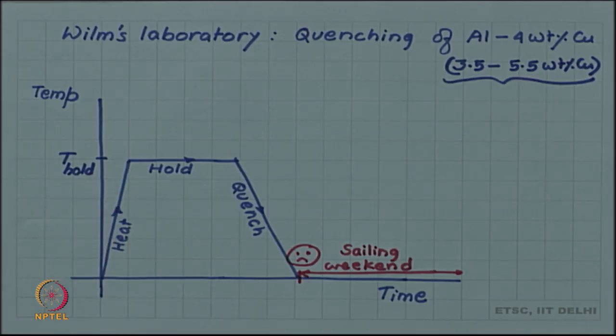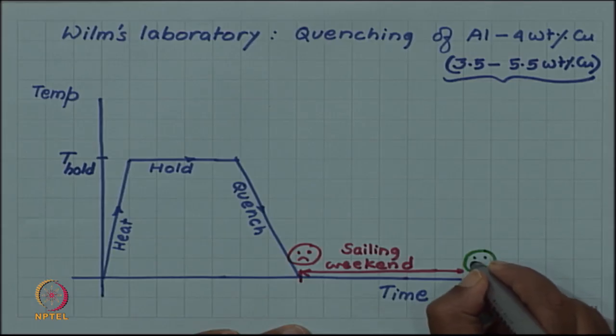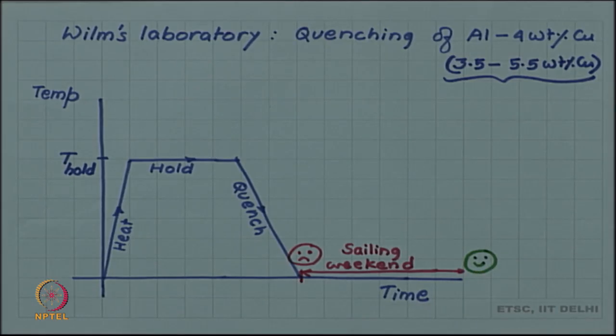He did again a controlled experiment where he quenched and deliberately waited long enough time to measure the hardness and he found that yes hardness is increasing simply because of waiting. Finally, his research was successful, he found a way of increasing the hardness. Hardness does not increase simply on quenching, but quenching and waiting that is as the time passes hardness seems to increase. He did not have an explanation, but experimentally he could prove that hardness is increasing as a function of time.